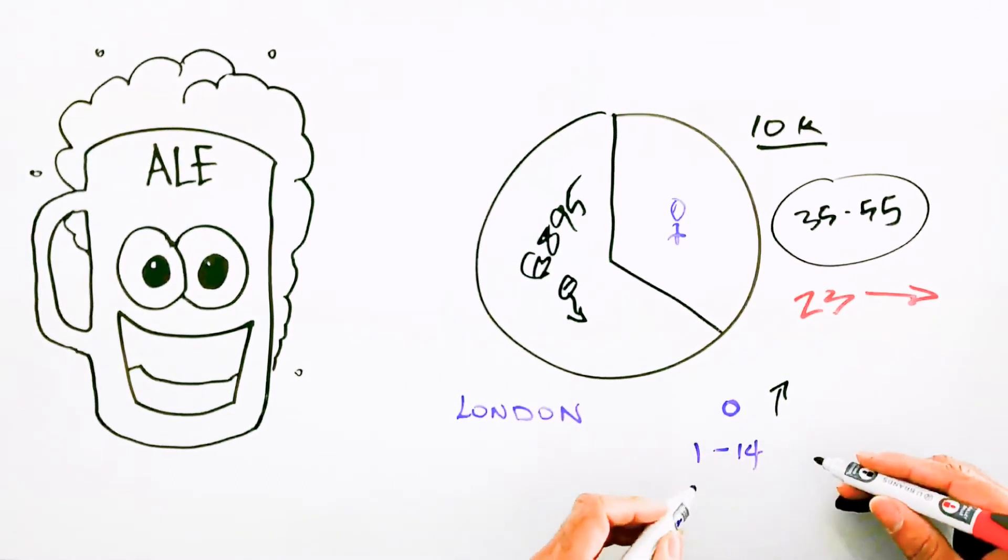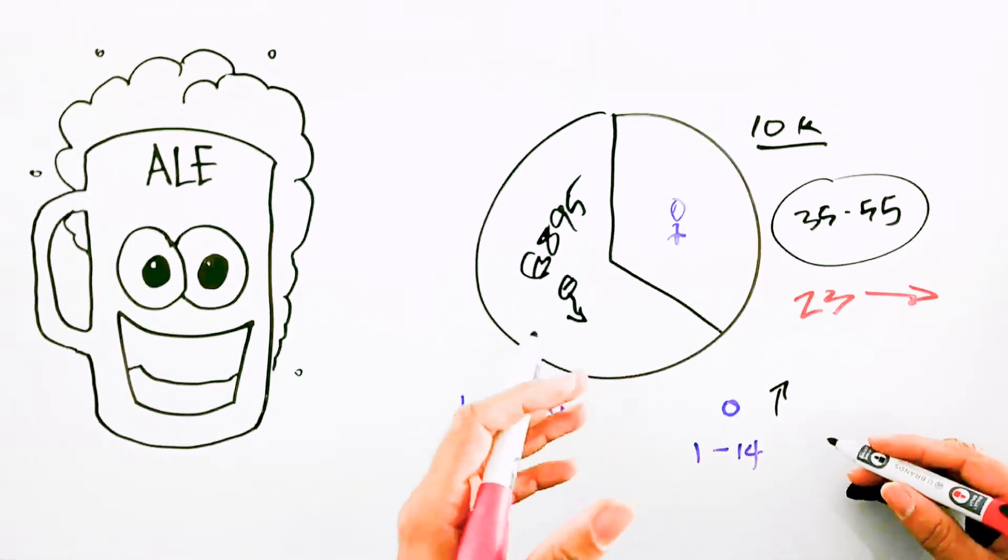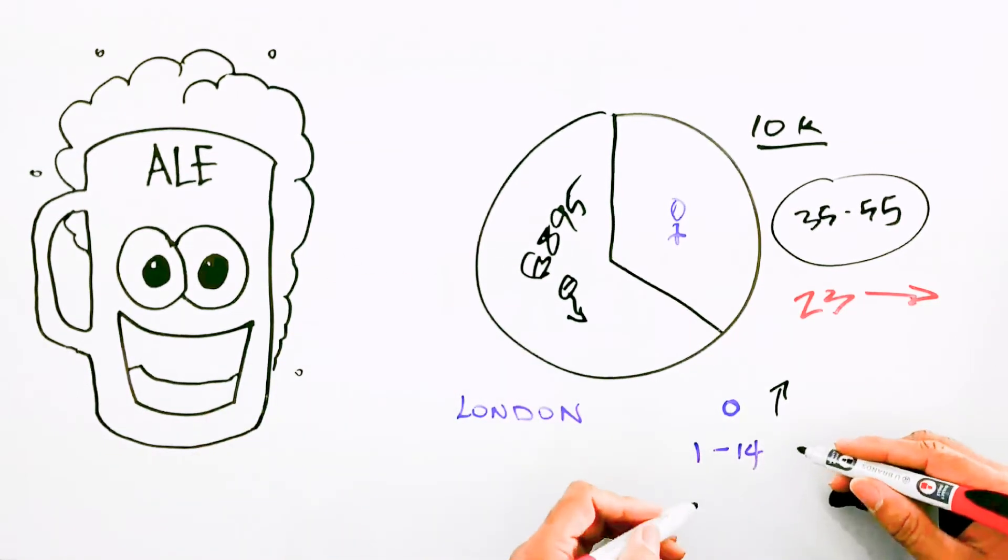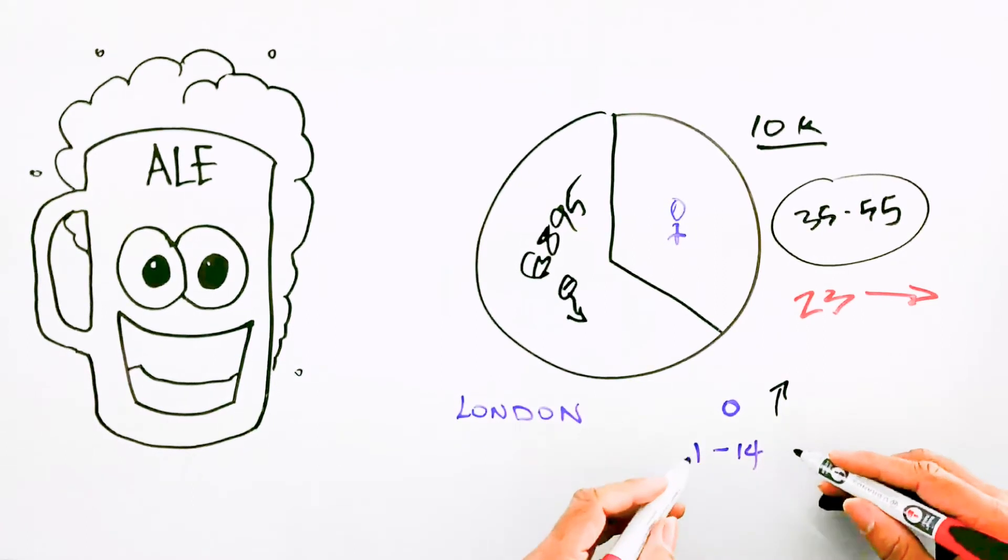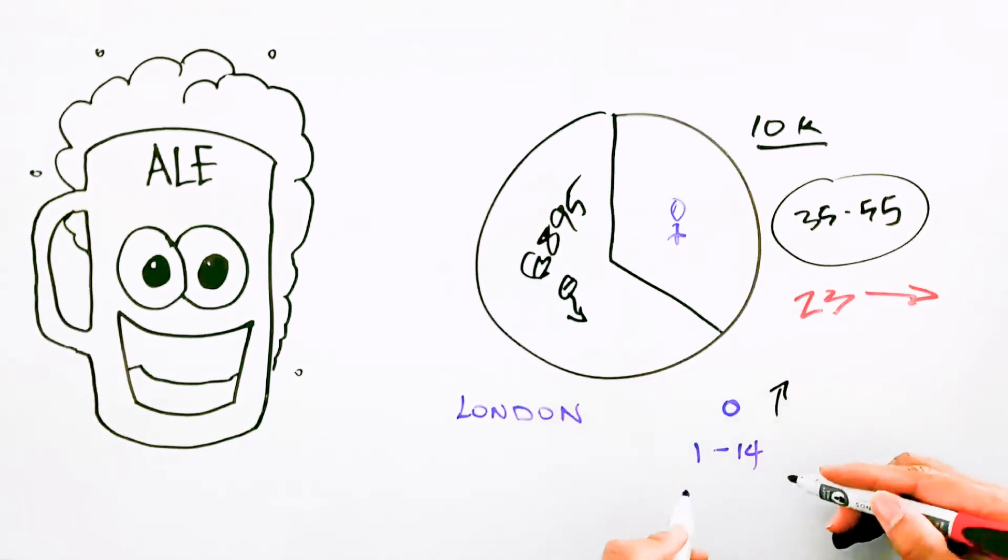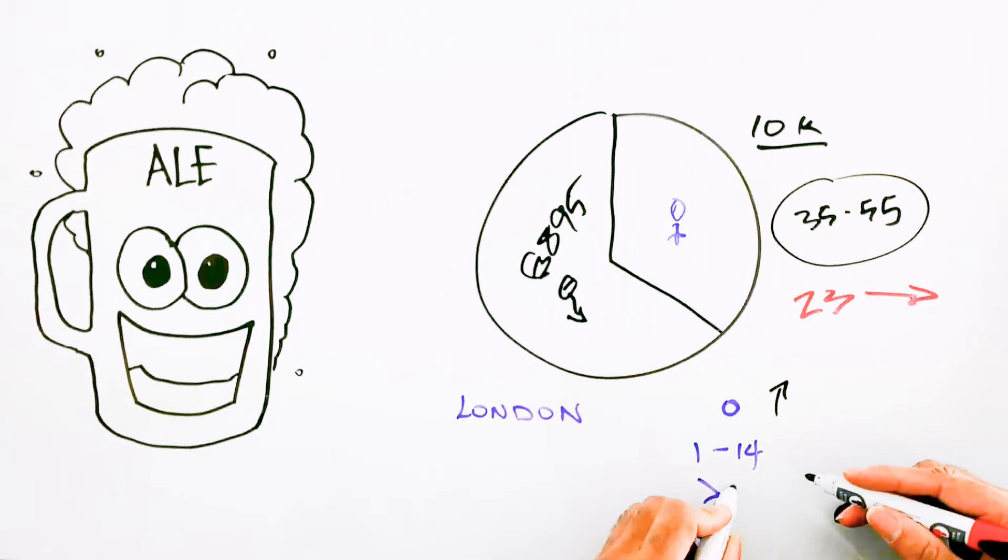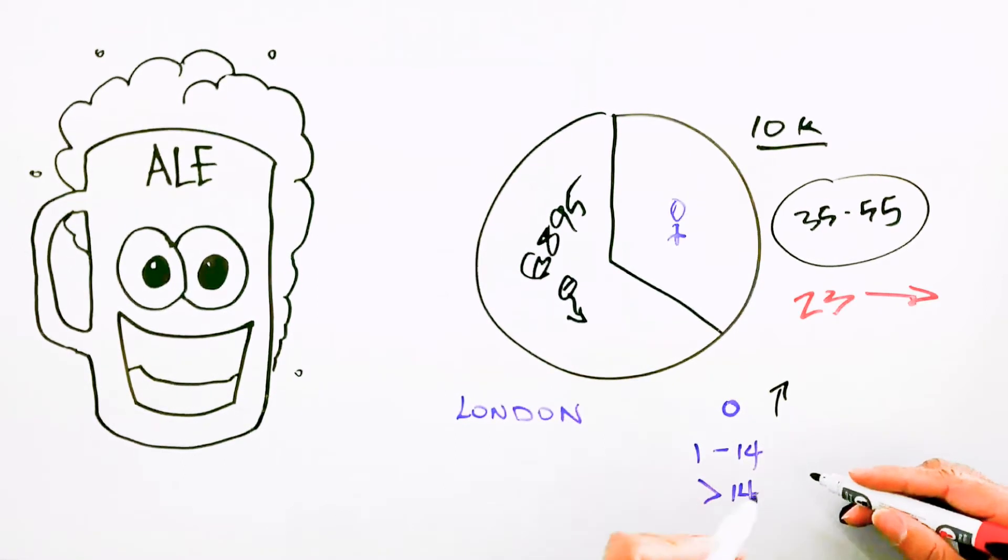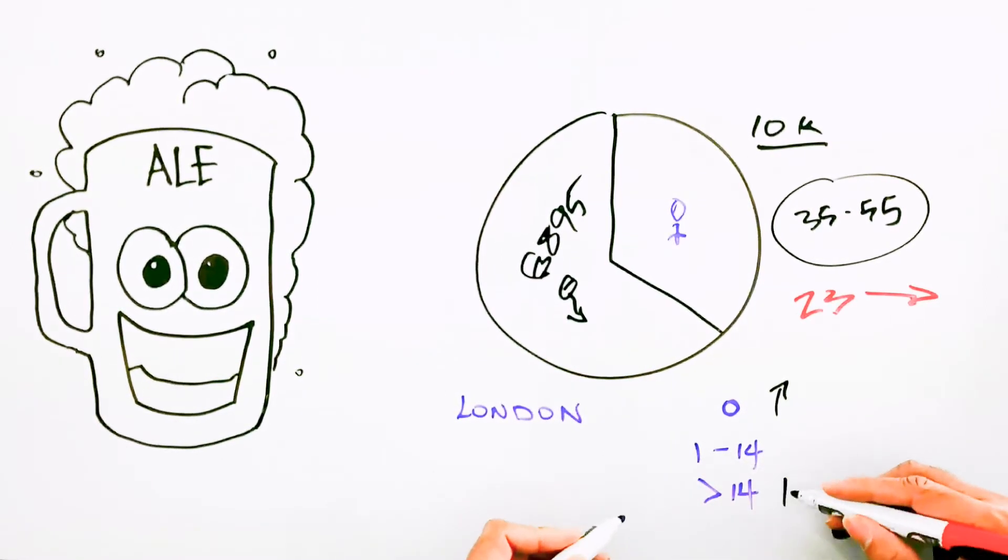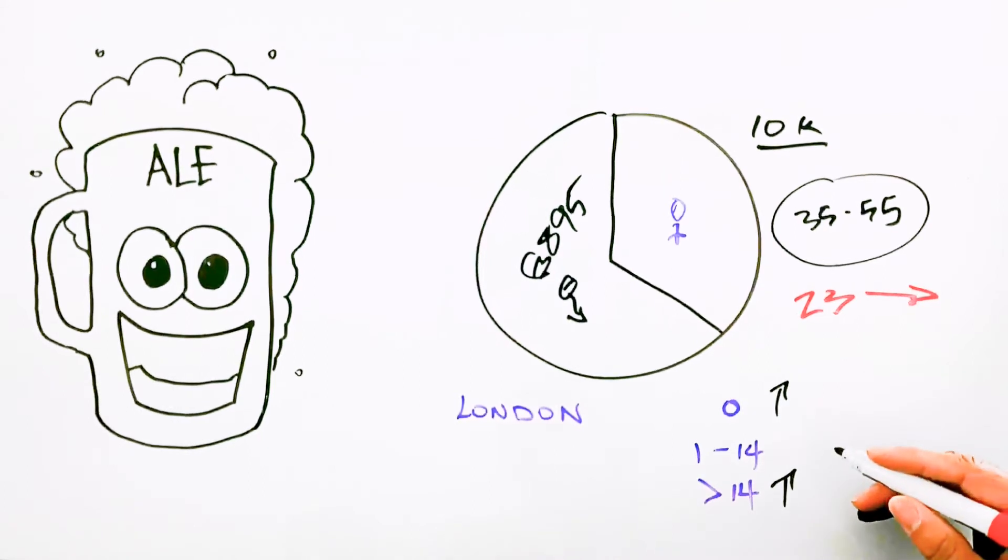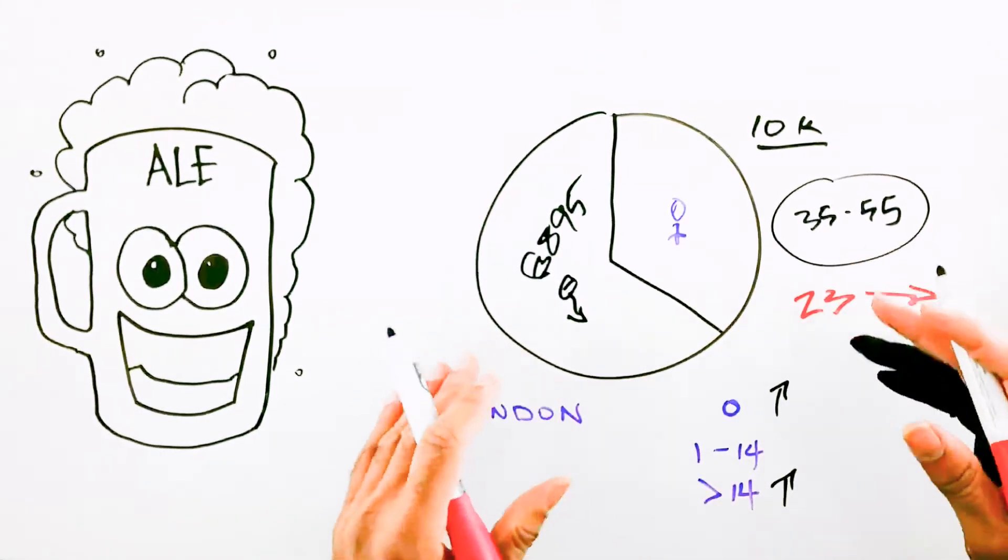So roughly two standard drinks per day. And if you don't know what a standard drink is, I've uploaded another video on that previously. Now what's interesting though is that if you go over 14 units per week, then the rates of dementia again go up. So what this suggests to us is...